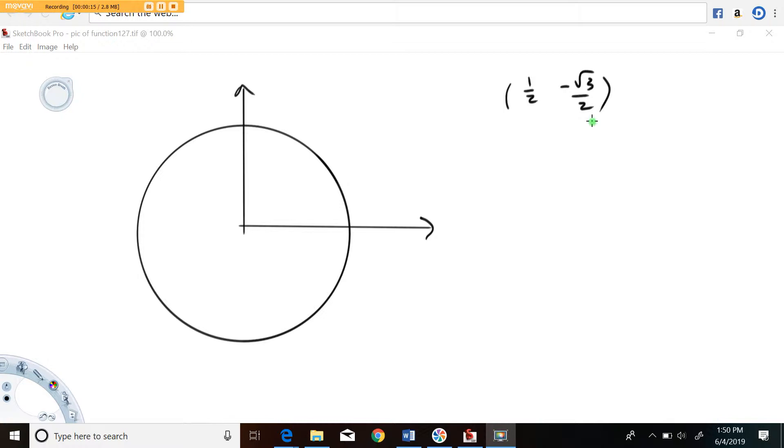So what you want to do is start by drawing a circle centered at the origin. I'm going to go ahead and put this point on the circle somewhere. So one half minus root three over two.